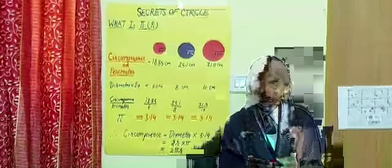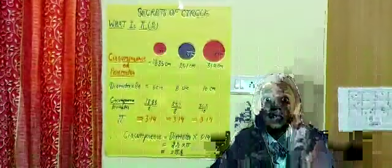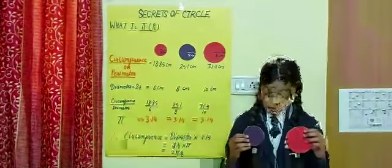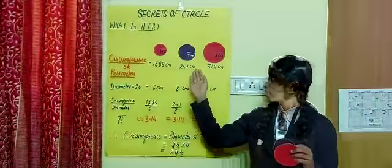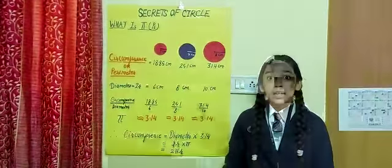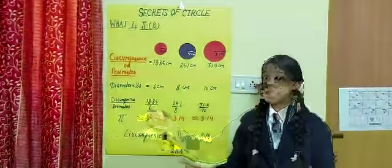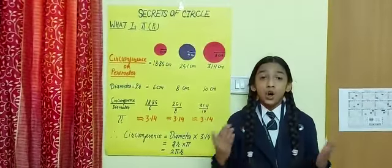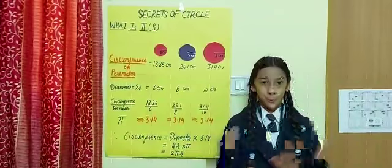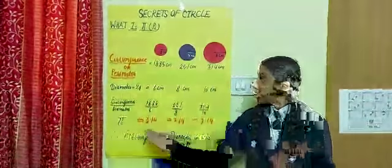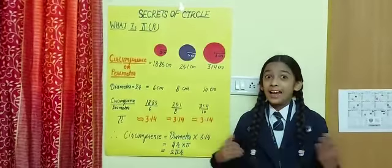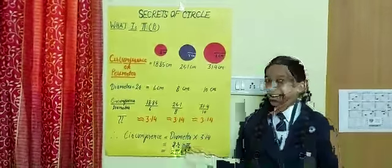It is approximately 18.2 cm. Similarly, these circles have their circumferences. Circumference upon diameter is equal to approximately 3.14 which is a constant value. This is known as pi. Circumference is equal to diameter into pi and it is equal to 2 pi r.